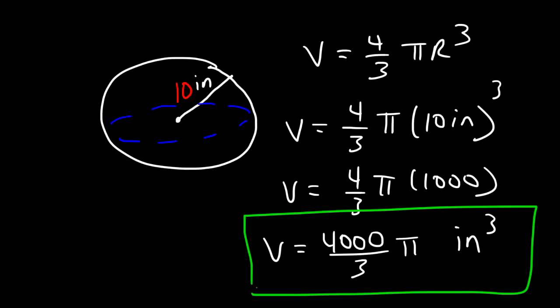And let's see what the answer is as a decimal. So this is equal to 4,188.8 cubic inches. So that's the rounded answer for volume.